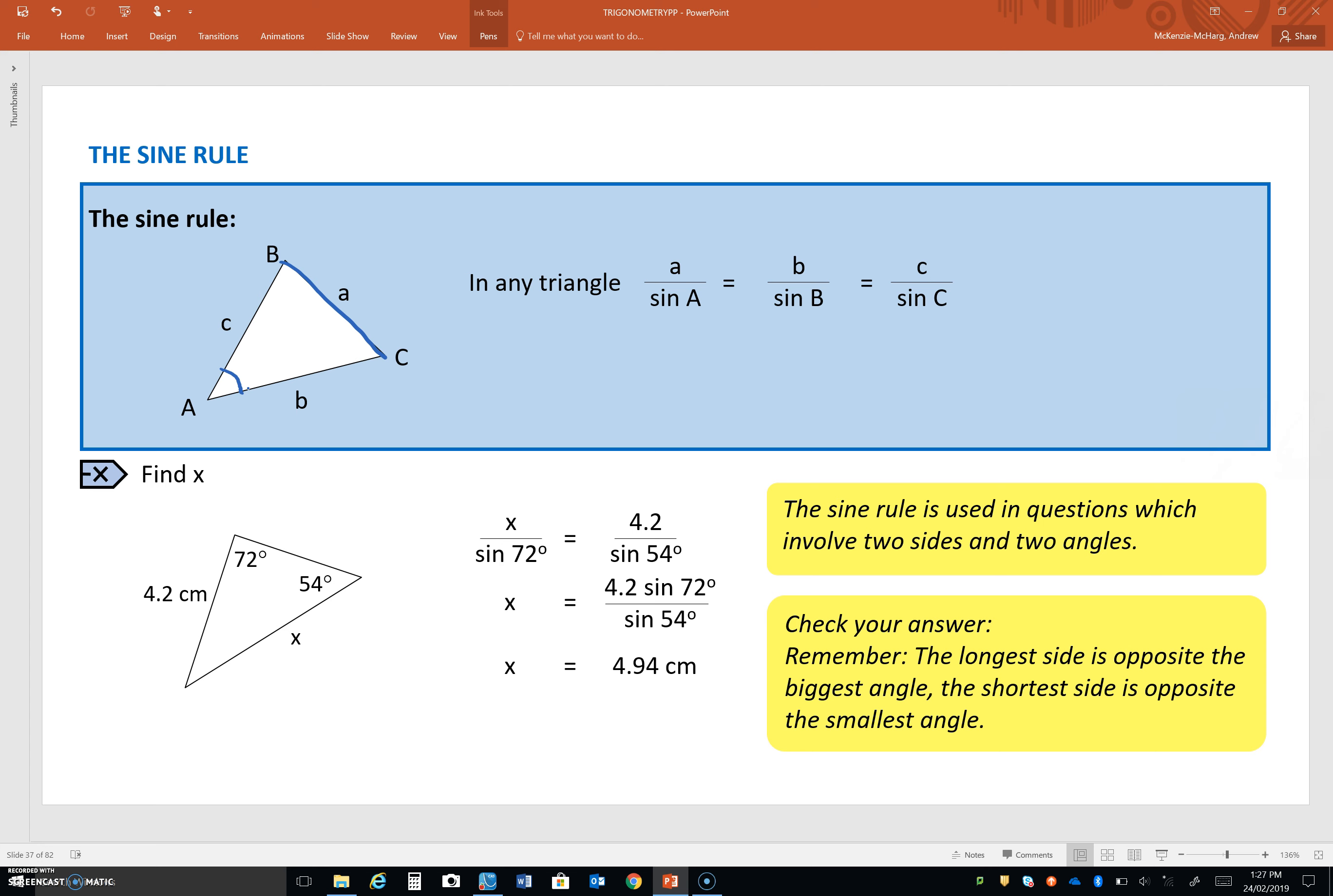you'll get, obviously, some number, right? Now, that number will be exactly the same if you do the same for any other side of the triangle with an angle opposite.